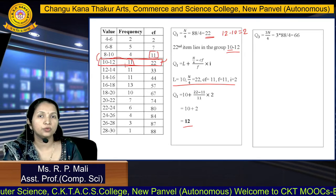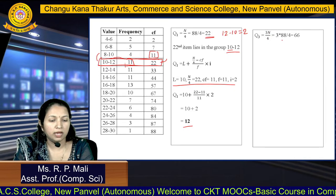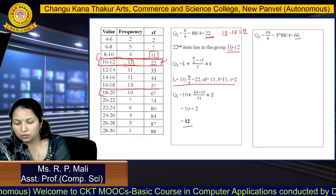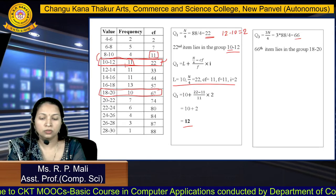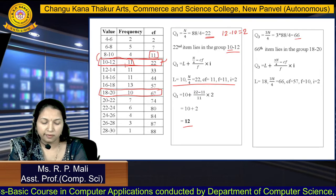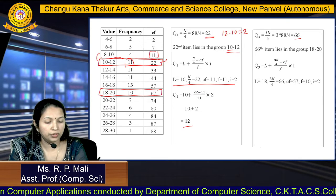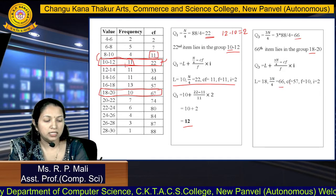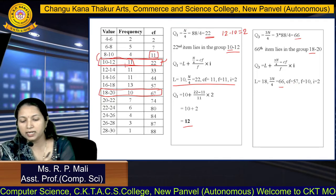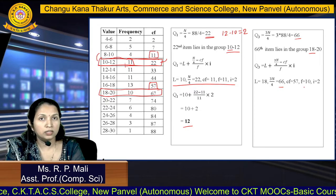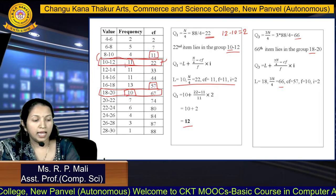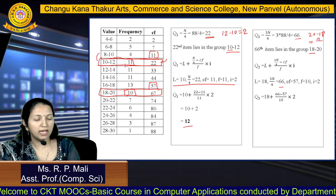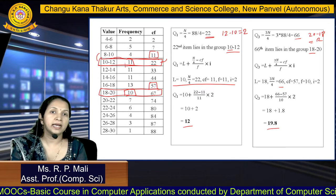Now we find the value for Q3. The Q3 item is 3N by 4, which is 3 into 88 by 4, that is 66. This 66 lies in the class 18 to 20. So L is 18, 3N by 4 is 66, CF is the cumulative frequency of the preceding class which is 57, F is the frequency of that class which is 10, and I is 20 minus 18 equals 2. After calculation, Q3 equals 19.8.